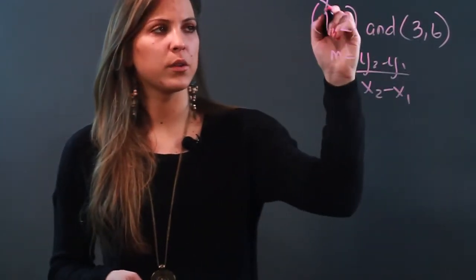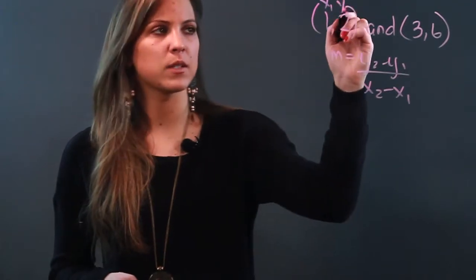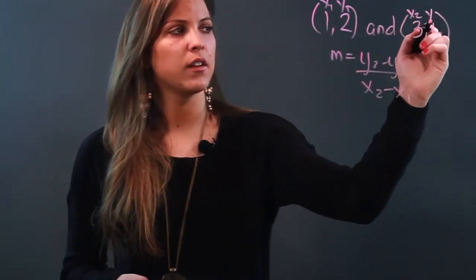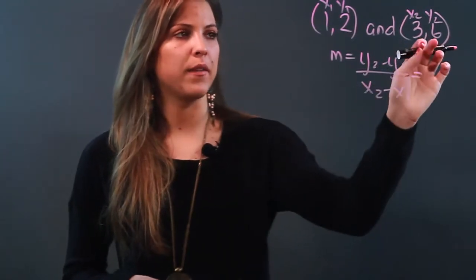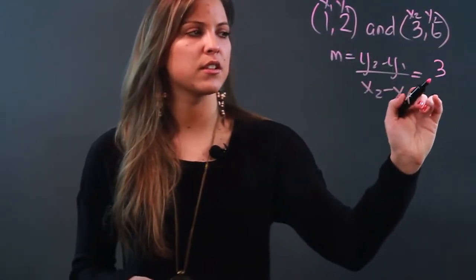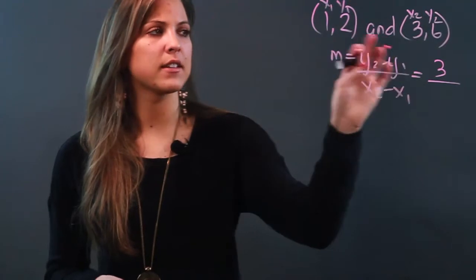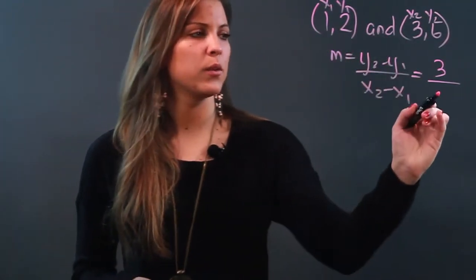I'm going to label these coordinates so you know which is which. If this is x1 then this is y1, and if this is x2 that's y2. Now I'll substitute: y2 minus y1 means 5 minus 2 which is 3, and then x2 minus x1 is 3 minus 1 which is 2.